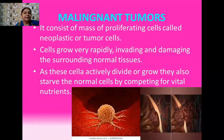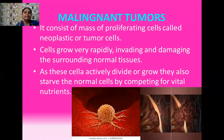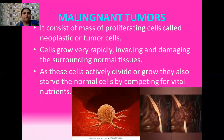Malignant tumors generally consist of masses of proliferating cells, also called neoplastic or cancerous cells. These cells grow rapidly, invade other cells, damage the surrounding tissues, and convert normal healthy cells into cancerous cells. As they divide actively and grow, they starve the normal cells by competing for vital nutrients. Their needs are not satisfied, so they keep on infecting other cells, keep evolving in your body, and in this way cancer spreads to all parts of your body.